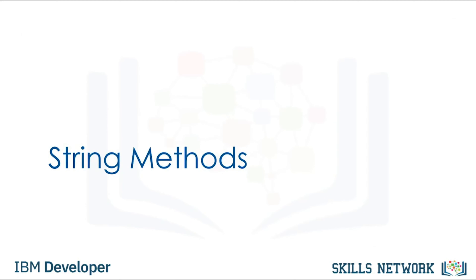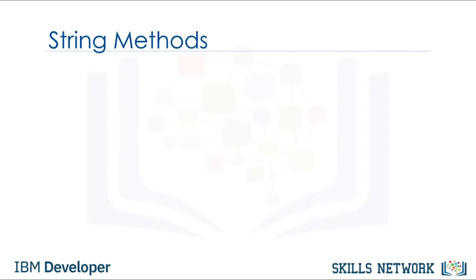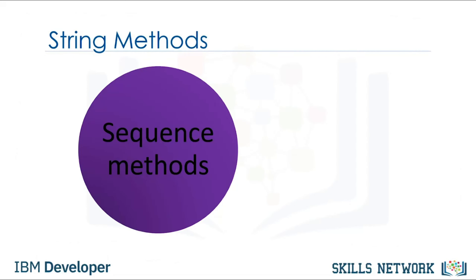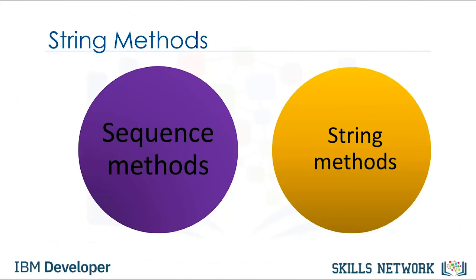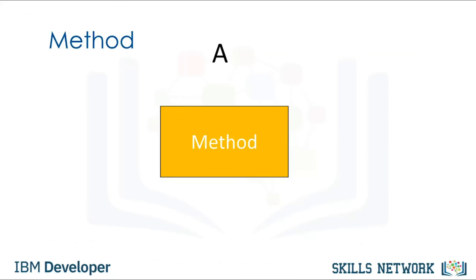Now let's take a look at string methods. Strings are sequences and, as such, have methods that work on lists and tuples. Strings also have a second set of methods that just work on strings. When we apply a method to string A, we get a new string B that is different from A.